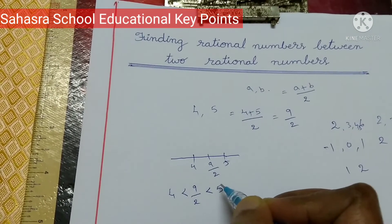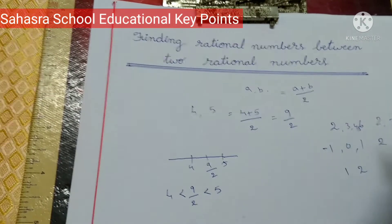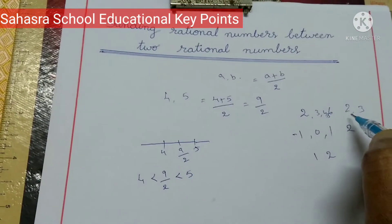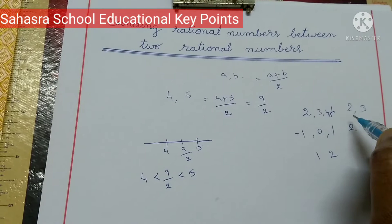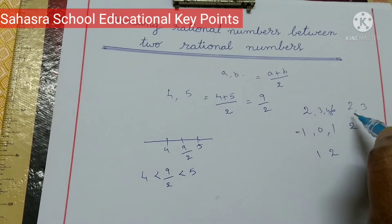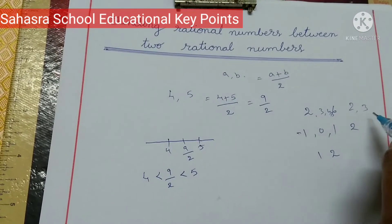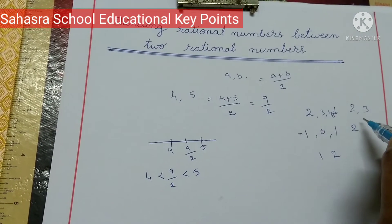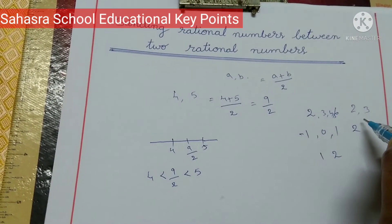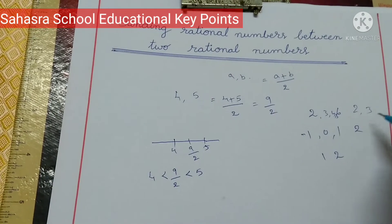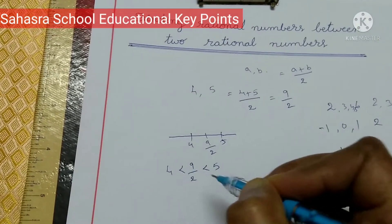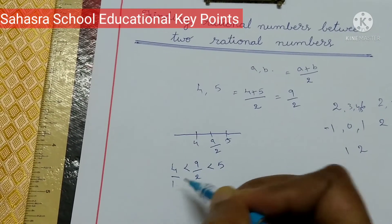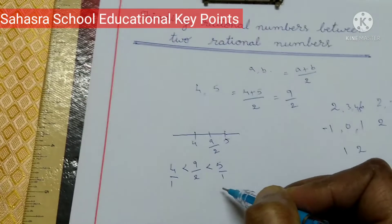If you take the number line, the natural numbers between 2 and 3 are shown. In fraction form, 4 and 5 can be written as 4 by 1 and 5 by 1. The rational numbers are equal to 4 by 1 and 5 by 1.